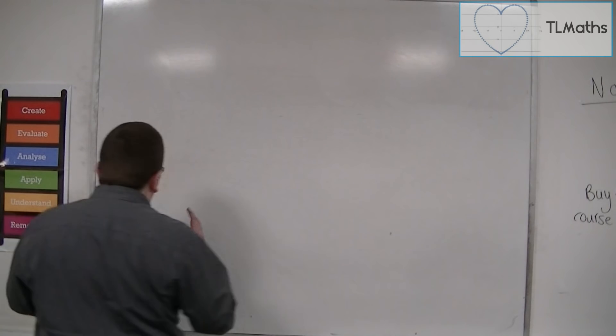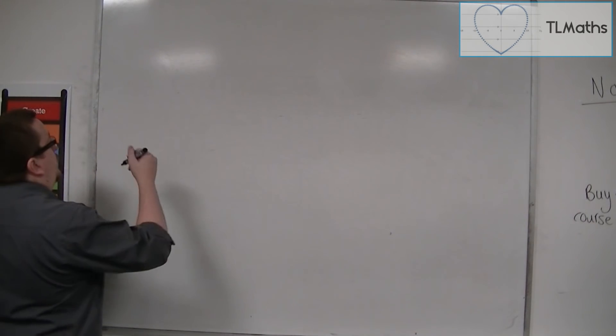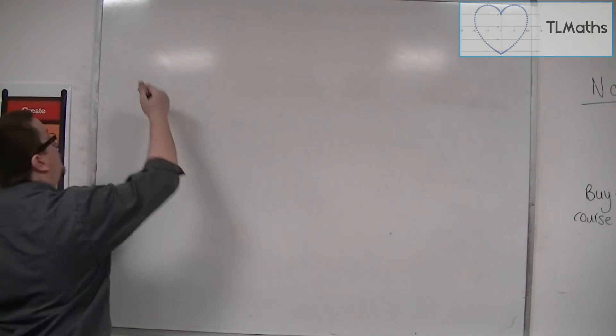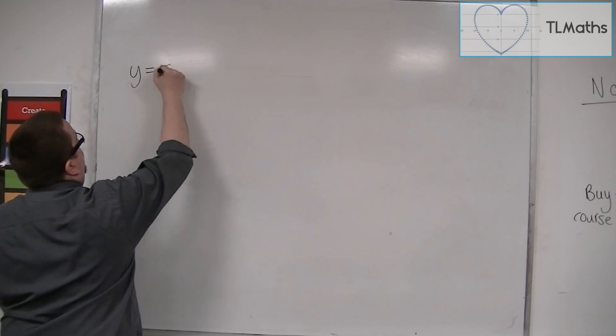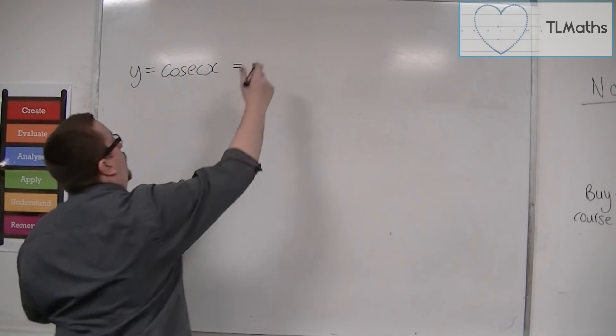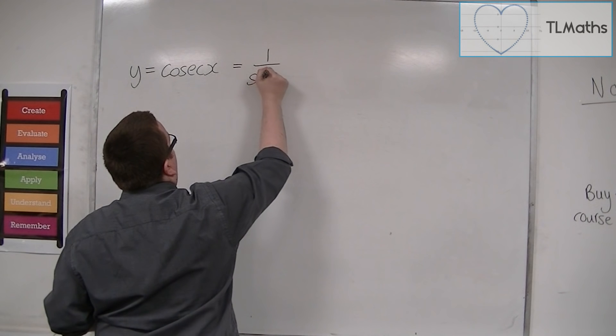So we already know y is equal to sine x, cos x, and tan x. y is equal to cosec of x is the same as 1 over sine x.